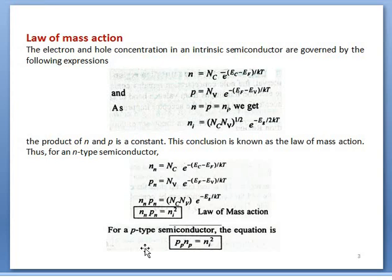Applying this equation to p-type, we will have Pp·Np. For p-type we use P at the subscripts. The majority charge carriers in p-type are holes, so Pp, and the minority charge carriers are electrons, Np. So the product of majority and minority charge carriers is constant. When impurity concentration is high, majority carriers increase and minority charge carriers will be smaller, giving a constant product.